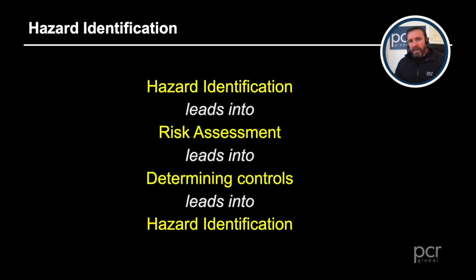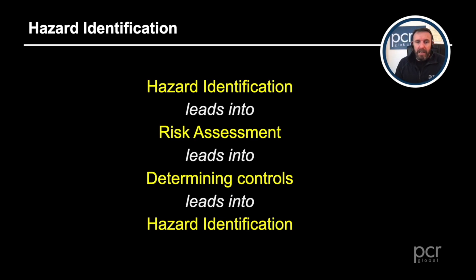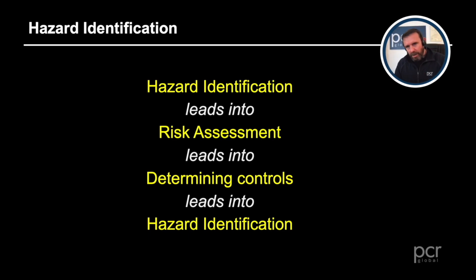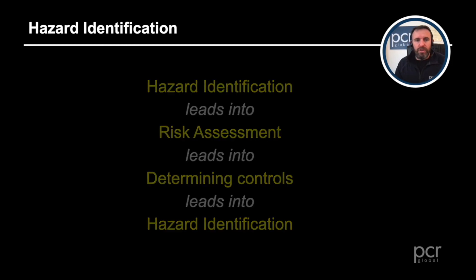Hazard identification leads into risk assessment, which leads into determining the controls needed, which then leads back into hazard identification. As we can see, it is cyclical — it is iterative. It goes on and on because risk changes.